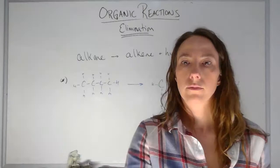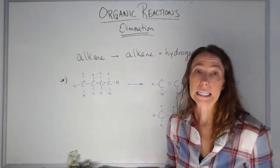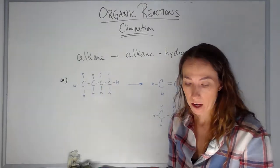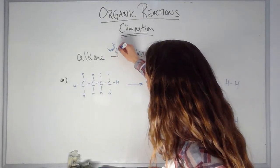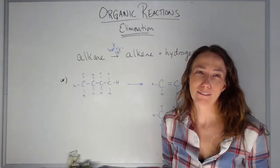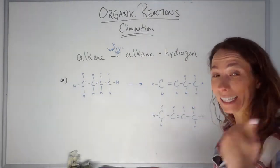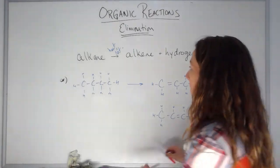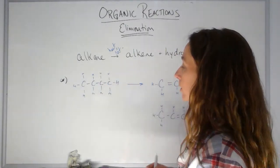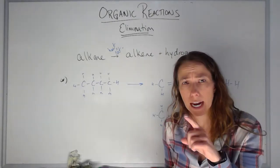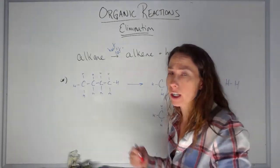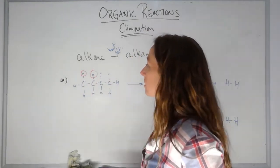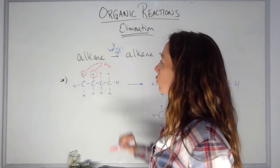There's one more elimination reaction — I've saved the easiest for last. We're going to take an alkane and with heat and catalyst form an alkene and hydrogen gas. I'm going to rip off two neighboring hydrogens — they have to be beside each other, otherwise I can't form a double bond. Those two neighboring hydrogens come together to form H₂.